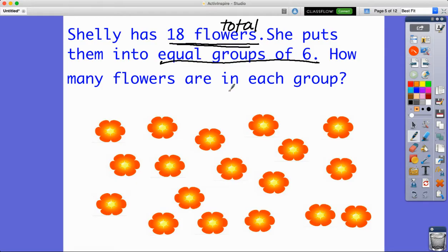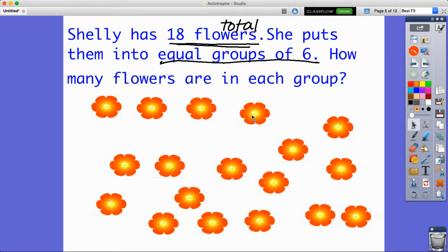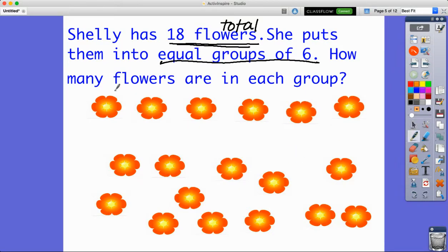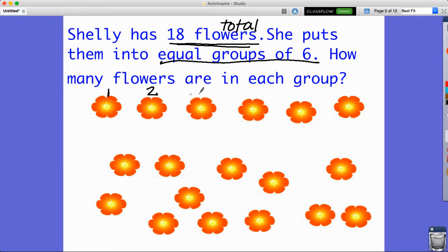We want to know how many are going to be in each of those groups, so I'm going to model this problem with an array. I'll start making groups of six flowers, so I'm going to pull six flowers up here and label them: one, two, three, four, five, six.